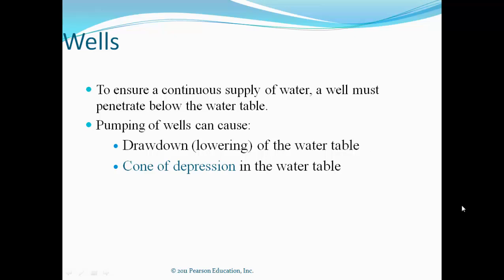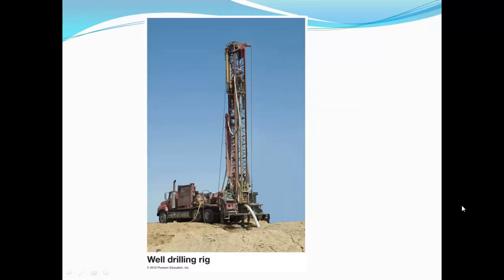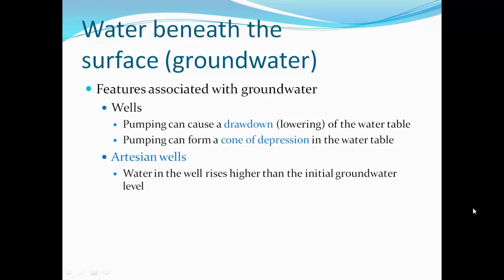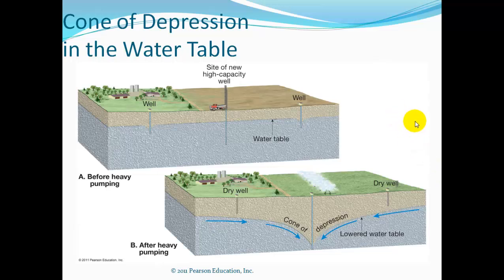To ensure a continuous supply of water, a well must penetrate below the water table. Pumping of wells can cause drawdown — a lowering of the water table — and the shape that forms is a cone of depression. As you pump the well, it causes the groundwater to draw down 360 degrees around that well. If you then install a high-capacity well for modernized irrigation, the big pump creates a large cone of depression, dramatically lowering the water table and drying up older, smaller wells nearby.